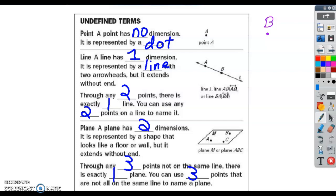A line has one dimension. It's represented by a line with two arrowheads in both directions and extends without end. So we can call this line over here line AB, or we can call it line BA. It doesn't really matter, it's the same line. And notice how the lowercase L is not next to a dot on the line. We can just call that line L, or we can call it line AB with a line symbol over the top of it.